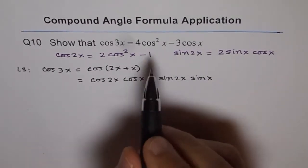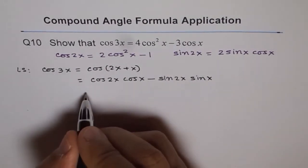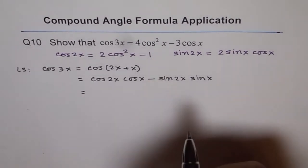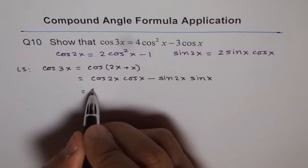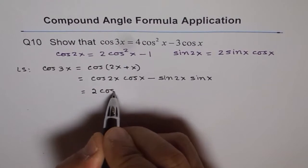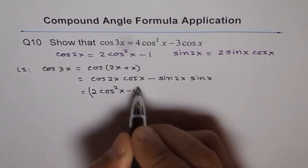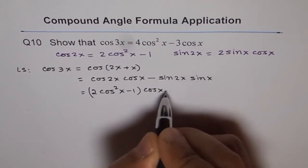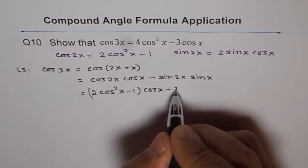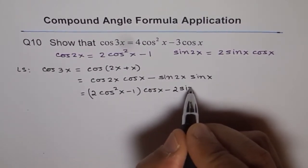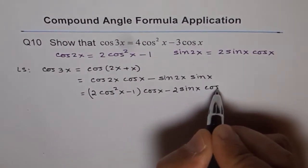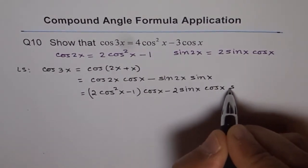So we have cos of 2x cos x minus sine of 2x sine x. And now cos of 2x, since we want cos x in terms, we will convert everything in terms of cos. So cos of 2x can be written as 2 cos squared x minus 1 times cos x minus sin 2x can be written as 2 sin x cos x times sin x.